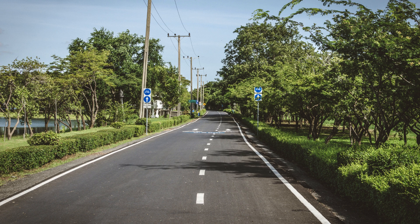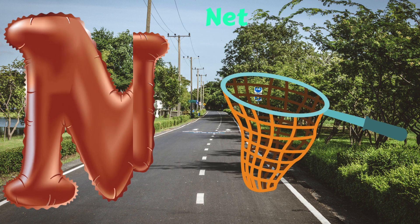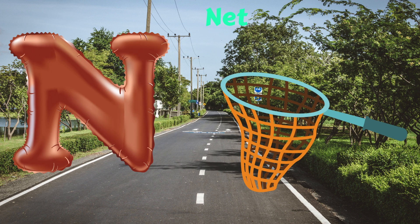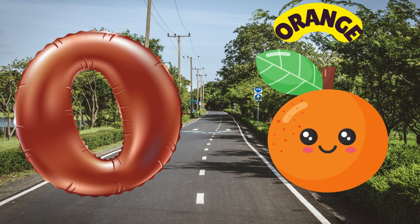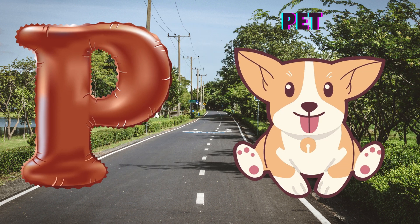M is for Mat, M-M-Mat. N is for Net, N-N-Net. O is for Orange, O-O-Orange. P is for Pet, P-P-Pet.